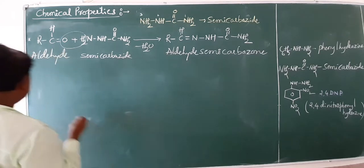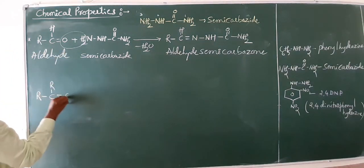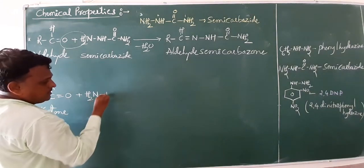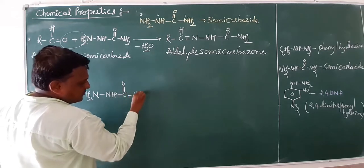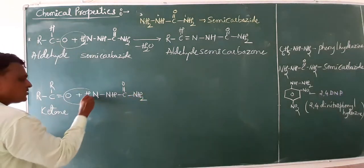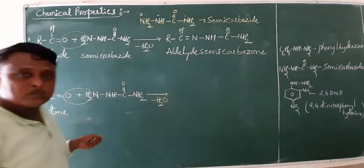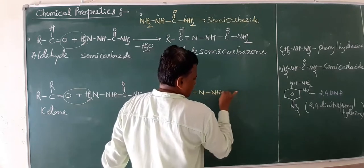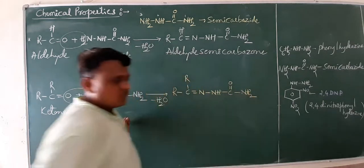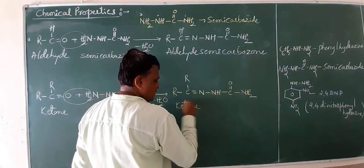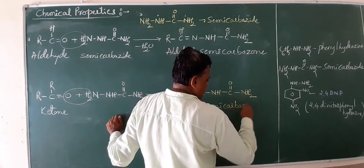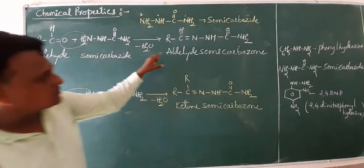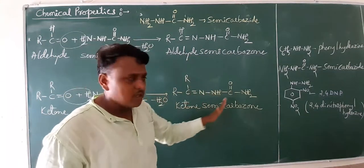You can practice with examples. When ketone reacts with semi-carbazine, with loss of water, the product is R-C(R)=N-NH-C(=O)-NH2 — the ketone semi-carbazone. Either aldehyde or ketone reacts with semi-carbazine to form the corresponding aldehyde semi-carbazone or ketone semi-carbazone. This is the fourth reaction of condensation in aldehydes and ketones.